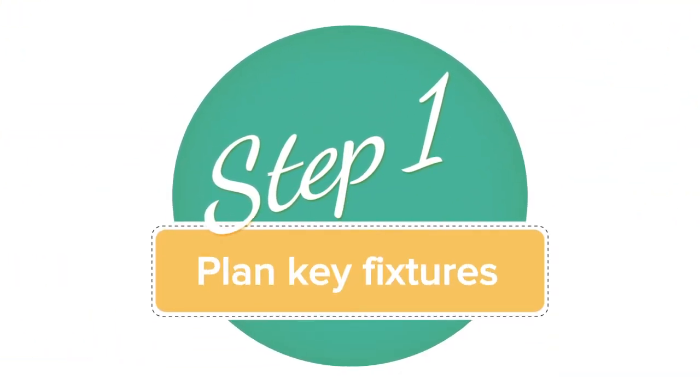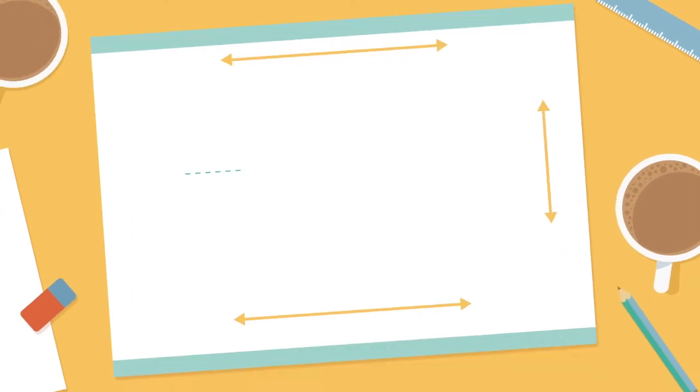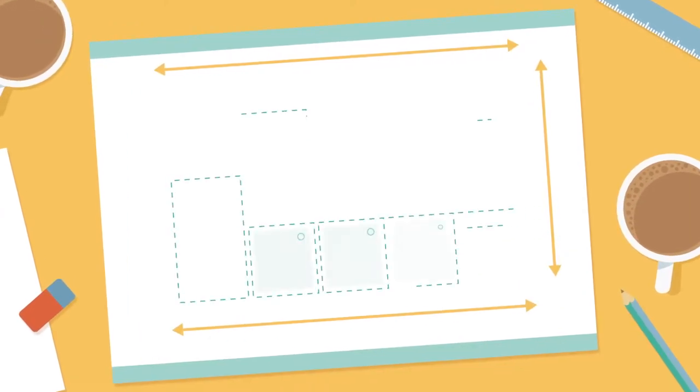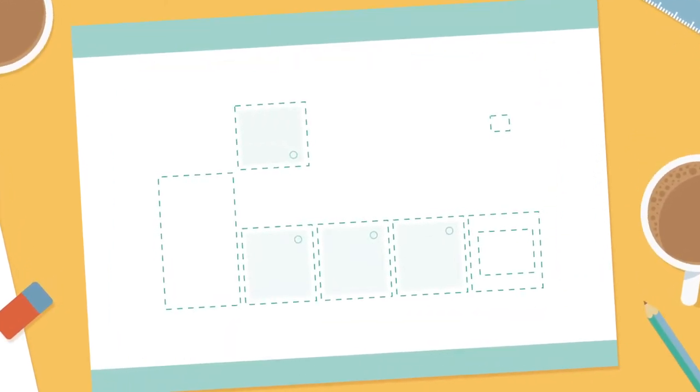Step 1: Plan key fixtures. Now you've got your measurements done and you've decided your basic layout, start to plan where you want your key fixtures.